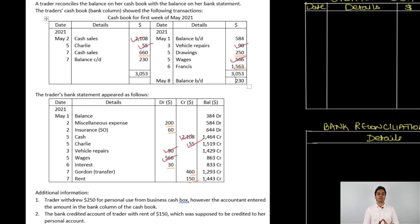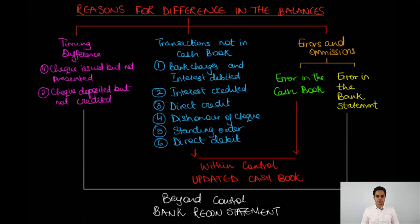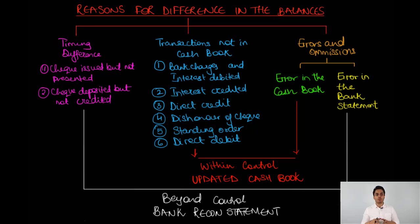From the video on bank reconciliation statement, I gave you a chart dividing all the reasons for differences into four categories: timing differences, transactions that are present in the bank statement but not in the cash book, errors in the cash book, and errors in the bank statement. The transactions present in the bank statement and errors in the cash book will be reconciled through updation of the cash book — we will prepare an updated cash book. Timing differences and errors in the bank statement will be reconciled through a bank reconciliation statement.